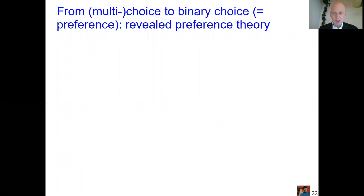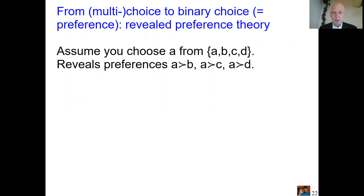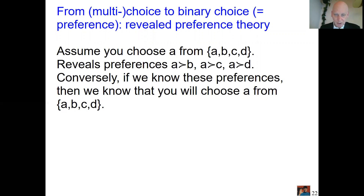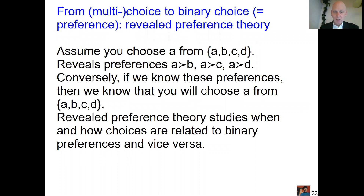We're going to look at general choice. Why do economists so often only look at binary choice and preference? Imagine you have to choose from four objects: a, b, c, d. You choose a — that reveals that you prefer a to b, prefer a to c, and prefer a to d. It reveals those three binary preferences. Conversely, if you know those binary preferences are valid, then you know you will choose a from {a, b, c, d}. This shows in a simple way how general choices and binary preferences can be related in revealed preference. Here we will study in general how this works — what mathematical and empirical properties apply.